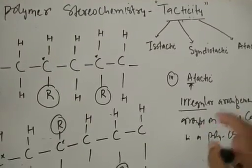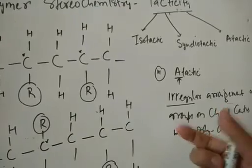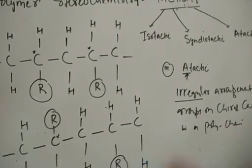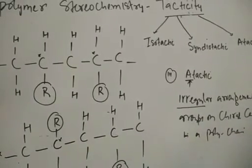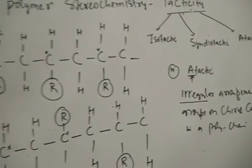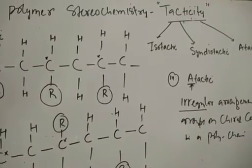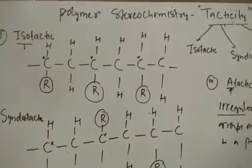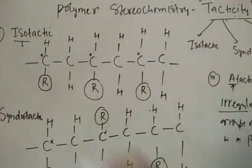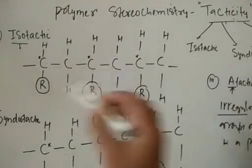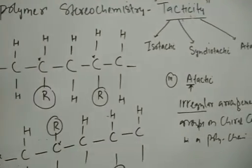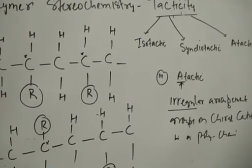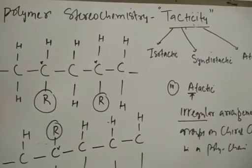So these are the three types of tactic polymers: isotactic, syndiotactic, and atactic. Remember, all three types of polymers have differences in their properties — their properties vary. That is why we are discussing the tacticity of polymers. In general, these are the basics about the stereochemistry and DL-isomerism in polymers — isotactic, syndiotactic, and atactic polymers, depending upon the arrangement of groups on the chiral centers in a polymeric chain. This is all for the day.